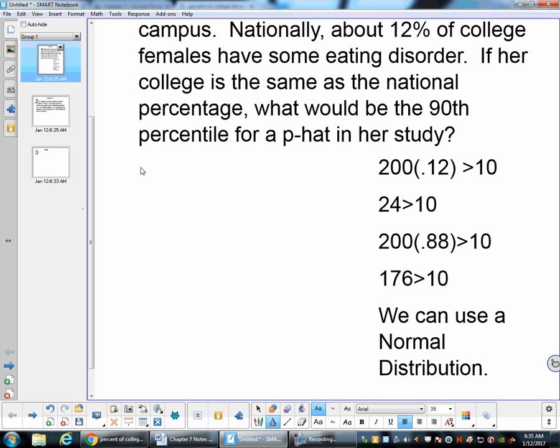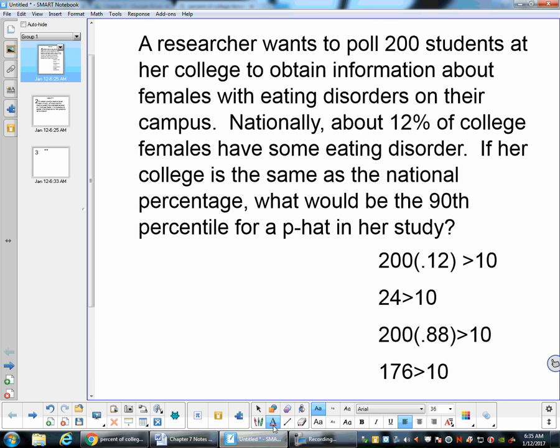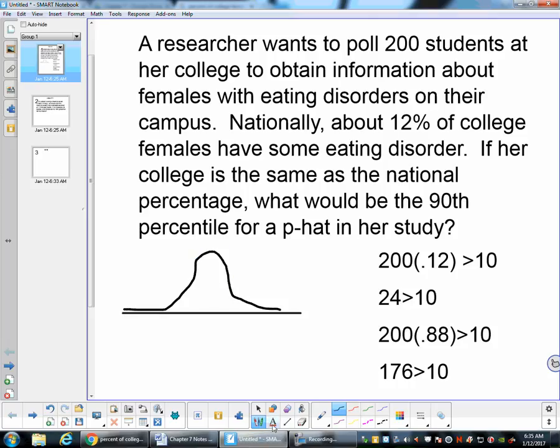Now let's come over here. We know that the distribution, if I draw something out here, it's going to be centered assuming her students are exactly like the national average. This is going to be centered around 0.12.